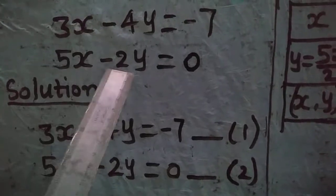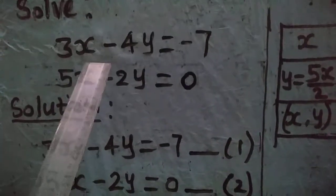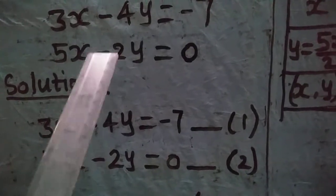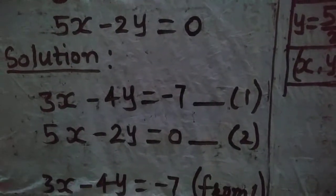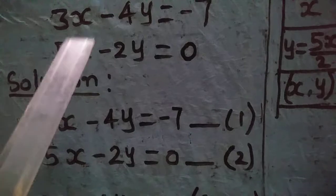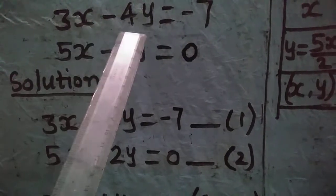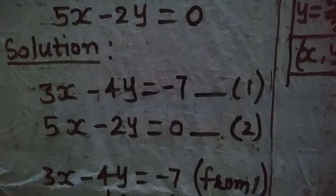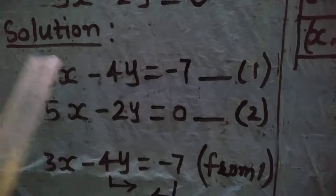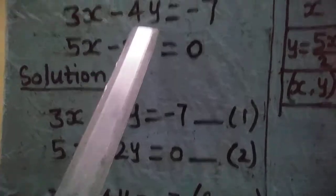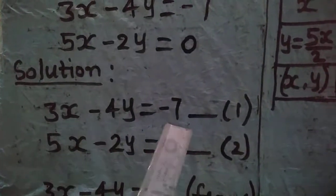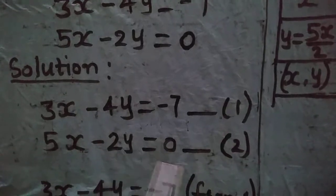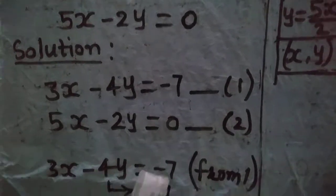While using the graphical method, the first step is to convert the given equations into the form of variable y. That is, convert each linear equation in the form of variable y. Equation 1 is 3x - 4y = -7, and Equation 2 is 5x - 2y = 0.